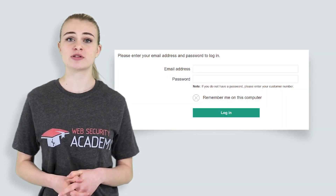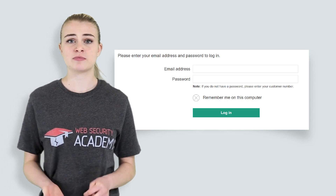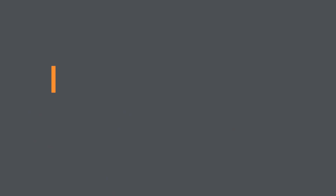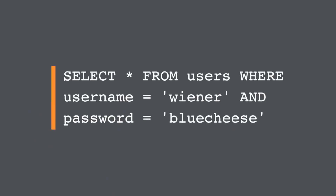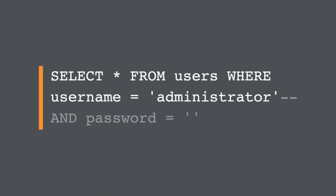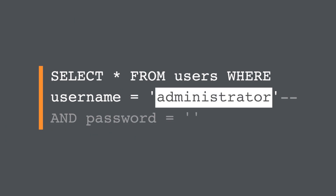Consider an application that lets users log in with a username and password. If a user submits the username 'wiener' and the password 'bluecheese', the application checks the credentials by performing this SQL query. If the query returns the details of a user, then the login is successful; if not, then the login is rejected. In this situation, an attacker can log in as any user without a password, simply by using the SQL comment sequence to remove the password check from the WHERE clause. If the attacker submits the username 'administrator'--', then the application performs this SQL query, which returns the user whose username is administrator, and successfully logs the attacker in as that user.